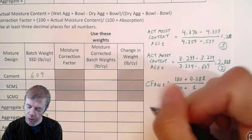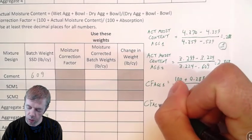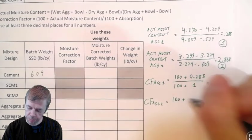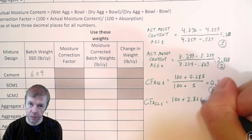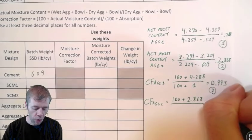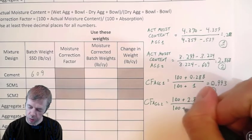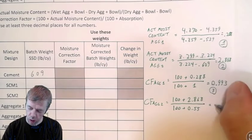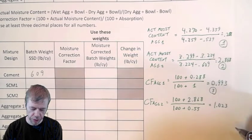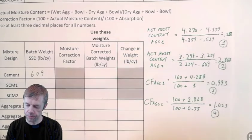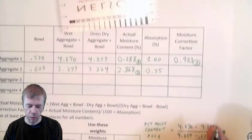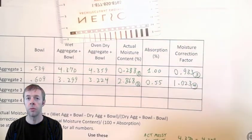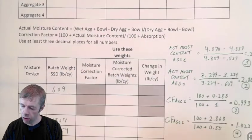Now let's look at calc number four — we're going to do the correction factor again but for aggregate number two. (100 + 2.868) / (100 + 0.55) = 1.023. Again, three decimal places are where you want to be. That's calc number four: 1.023. We now have our top table completed.